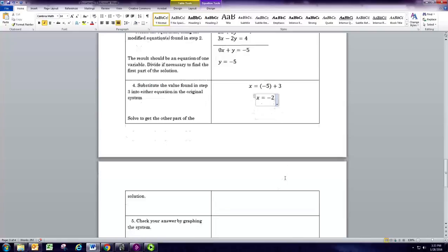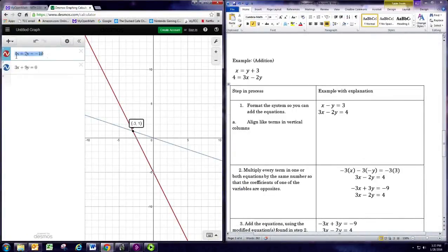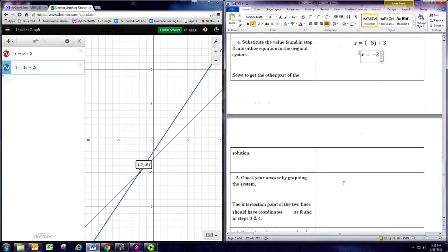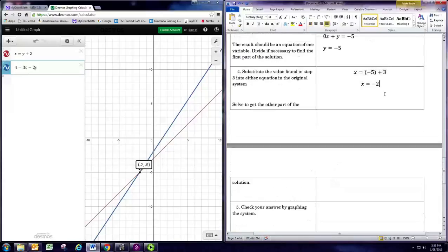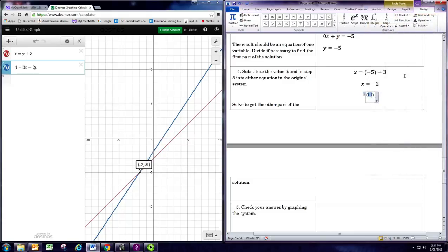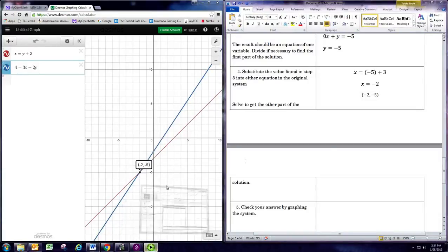So, again, we want to check our answer by graphing and see if we can get this point to show up. So, let's put in this equation and that equation, you can see the intersection point is negative 2, negative 5, which is the ordered pair that we found. So, let's put that here. We're going to state the solution. Negative 2, negative 5. And that's the solution.